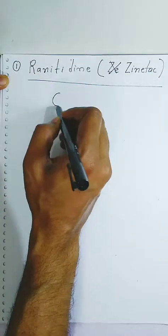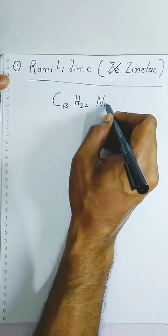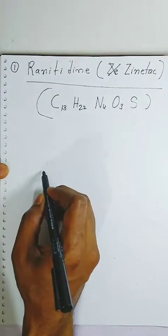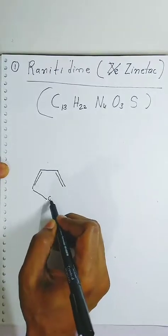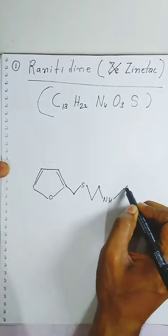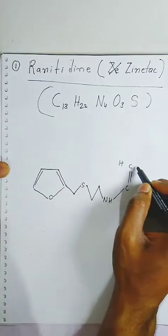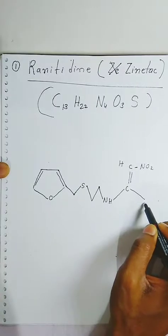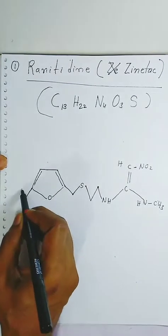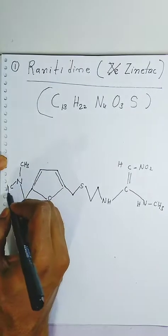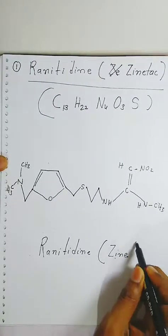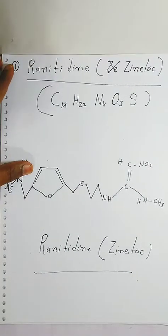When you see the molecular formula, ranitidine contains a furan ring. Because it contains one sulfur group, you have to draw one sulfur group. It also contains nitrogen. The total number of nitrogen is 4, so one more nitrogen will come here. This is the structure of ranitidine, which is very important. It is also called Zantac. In examinations they ask for the structure of ranitidine.